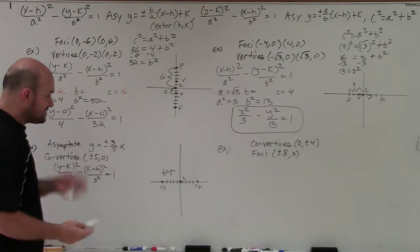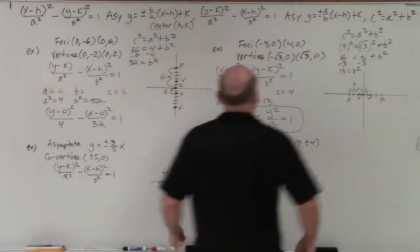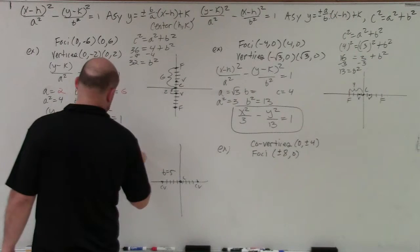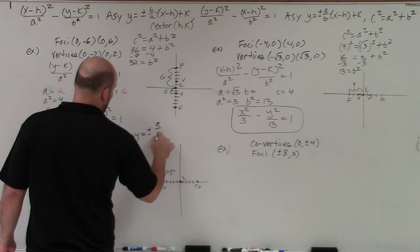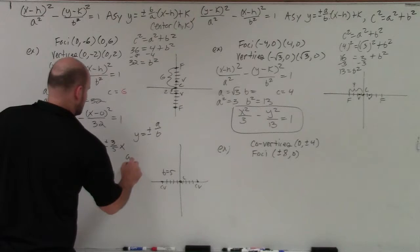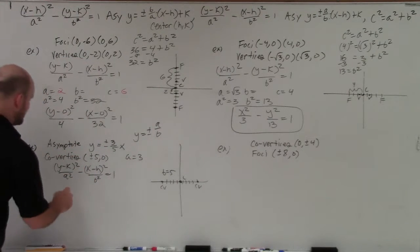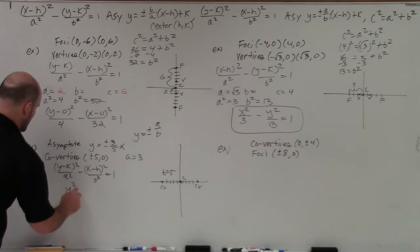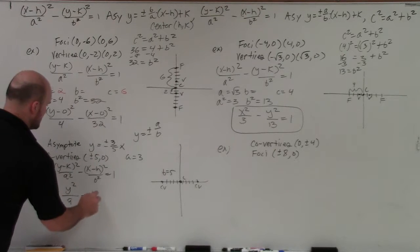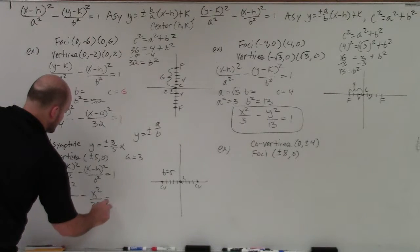Now I need to figure out A. Since this is a vertical transverse axis, we look at the asymptote equation Y equals ±(A/B). We know B is 5, so from the asymptote slope A equals 3. Now that I know A and B, with H and K at (0,0), I'll plug in: Y squared over A squared — which is 3 squared, which is 9 — minus X squared over B squared — which is 5 squared, which is 25 — equals 1. So it wasn't that bad.